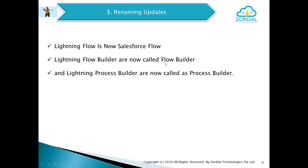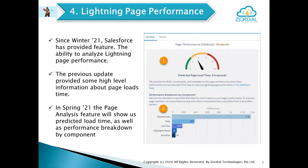The next one is renaming updates. Salesforce has renamed Lightning Flow to Salesforce Flow, Lightning Flow Builder to Flow Builder, and Lightning Process Builder to Process Builder. The next one is Lightning Page Performance. In Winter 21, Salesforce introduced a feature to analyze Lightning page performance, and now in Spring 21 they have taken it to the next level.